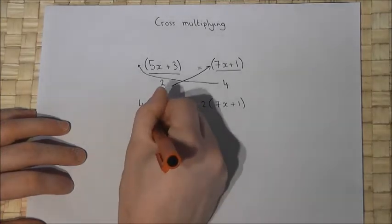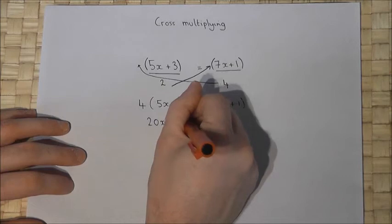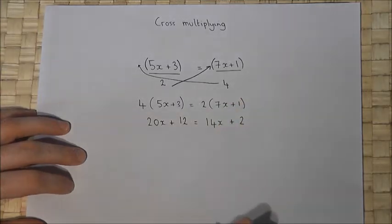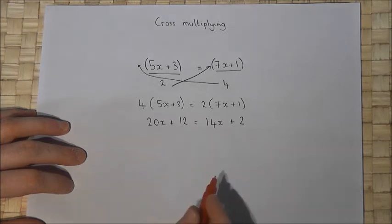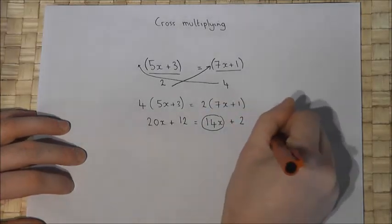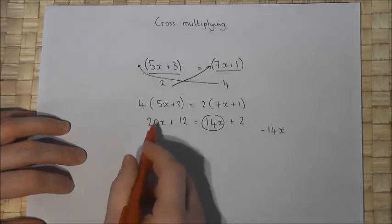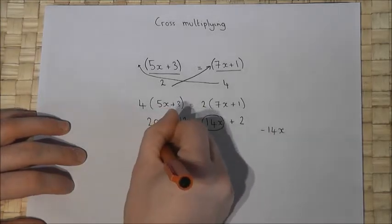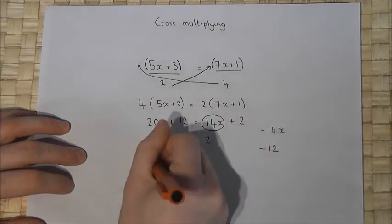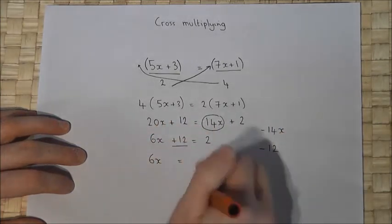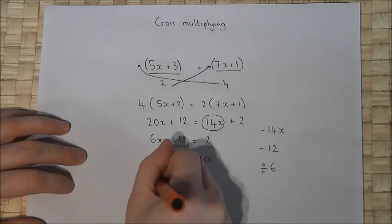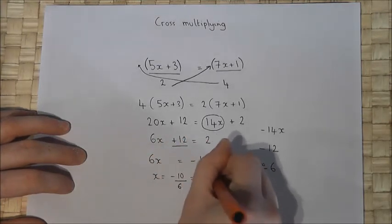This is an equation with brackets, so step one is to expand: 4 times 5x is 20x, 4 times 3 is 12, 2 times 7x is 14x, 2 times 1 is 2. Now I have x terms on both sides, so I take 14x from both sides: 20x take 14x is 6x, giving 6x plus 12 equals 2. There's a plus 12 so I take away 12, giving 6x equals minus 10, then dividing by 6 gives x equals minus 10 over 6, which cancels to minus 5 over 3.